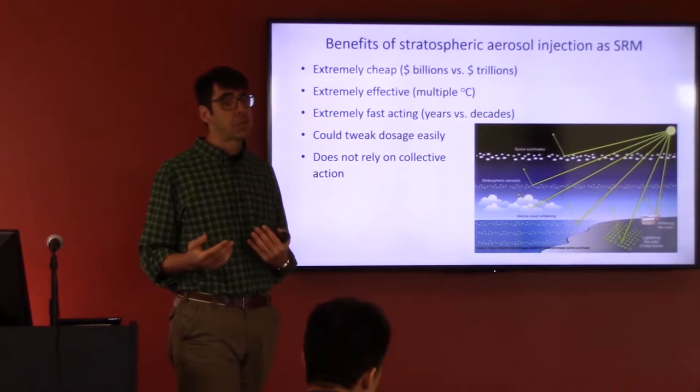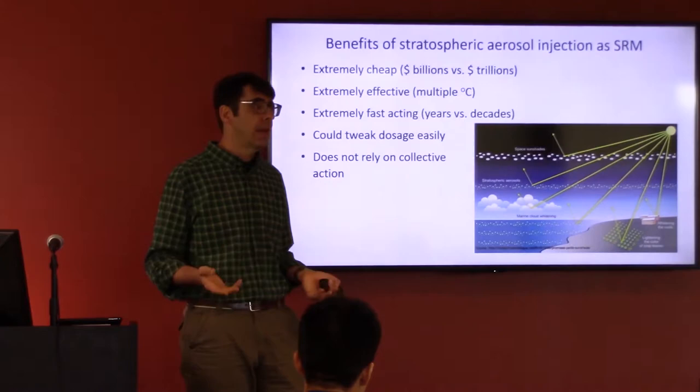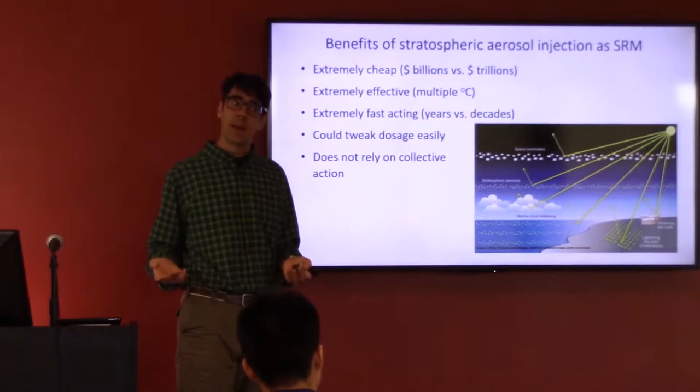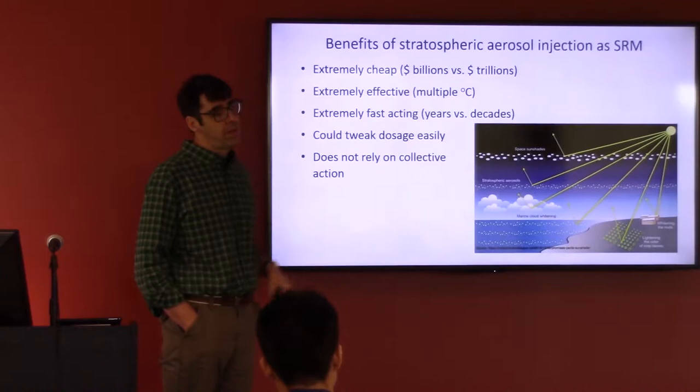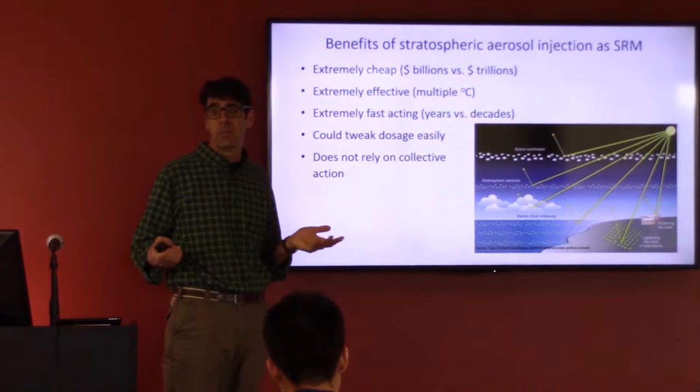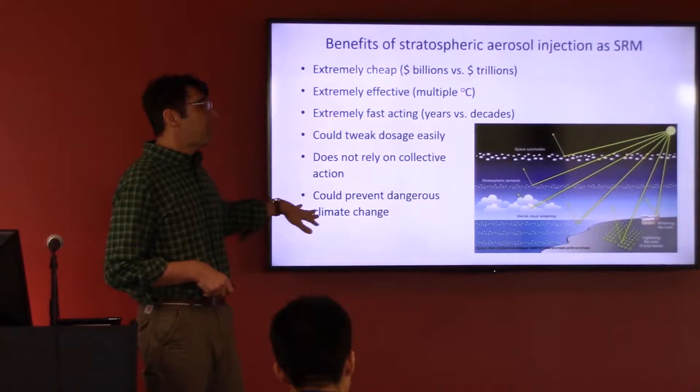Importantly from the perspective of strategy: it does not rely on collective action. Greenhouse gas mitigation, in order to be effective, requires collective action in which all nations — or at least all major nations — would need to participate. At the cost of billions, one nation could easily implement this on their own. In fact, it's been said that even a billionaire could begin to implement this as a corporation or individual. This could prevent dangerous climate change.